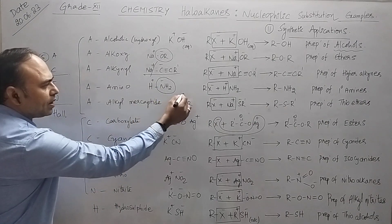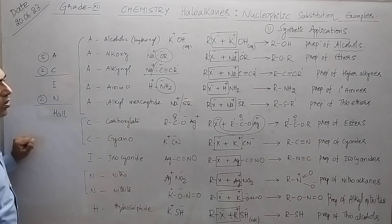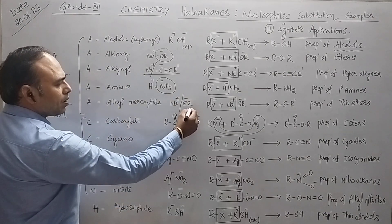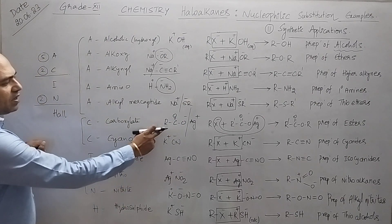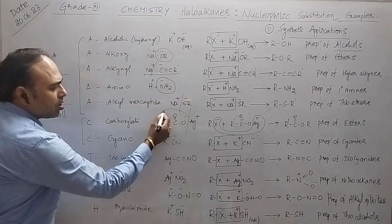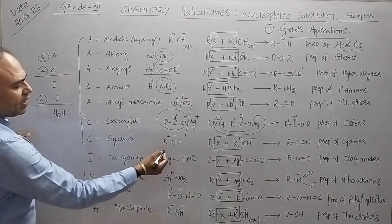Next, alkyl mercaptide, sodium alkyl mercaptide. Here we will get SR minus, that is your nucleophile. After this, carboxylate group, how you will get?